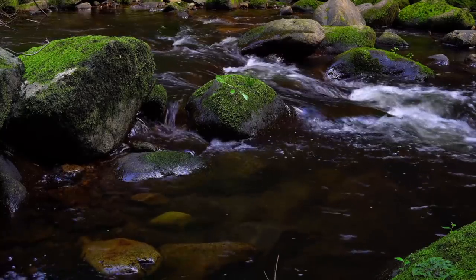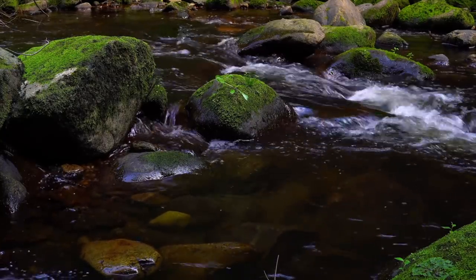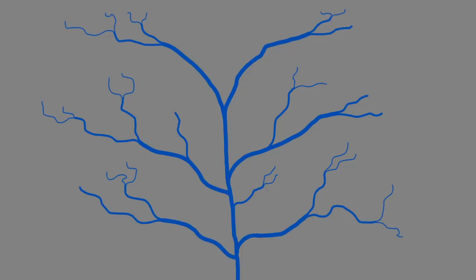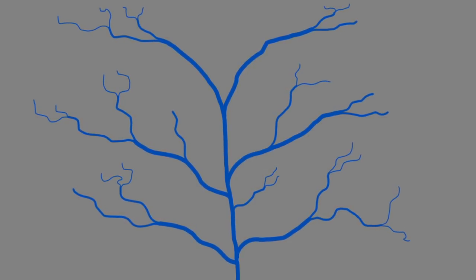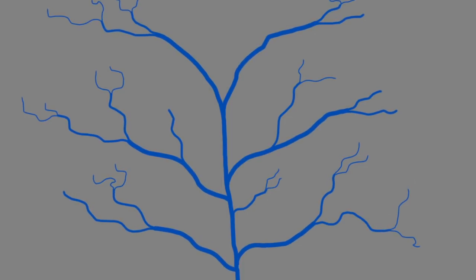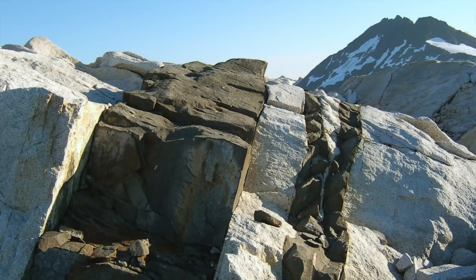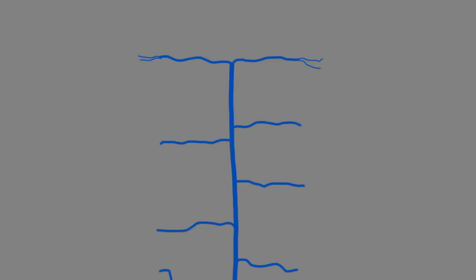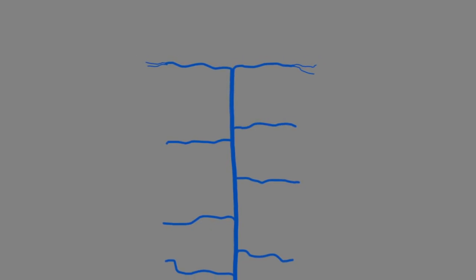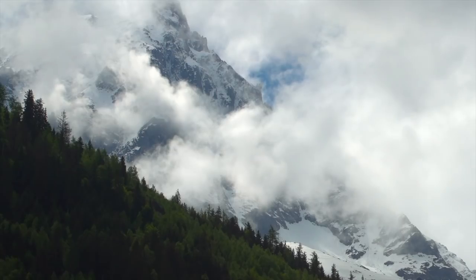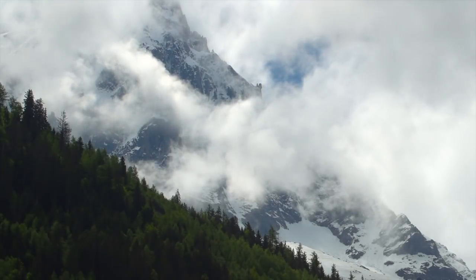Once streams begin to form, they flow in a pattern relative to the surrounding area — a drainage pattern. A dendritic drainage pattern is the most common type, where the ground is of uniform hardness and slope, causing tributaries to merge in the formation of a tree-like shape. In a trellis drainage system, tributaries join the main stream at right angles due to tectonic activity. When rivers begin near the top of a volcano or mountain, the water makes its way down all around in a radial drainage pattern. There are other types, usually relying on rock type and slope steepness.